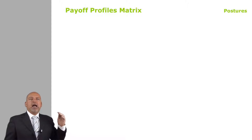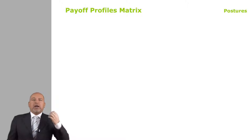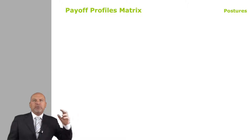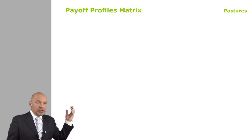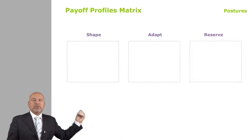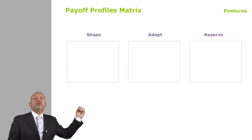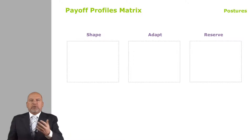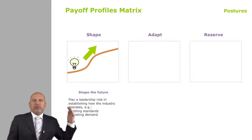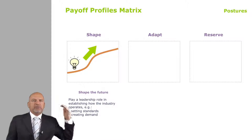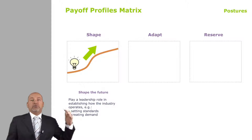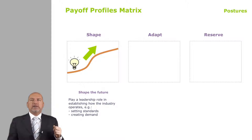The first step is the posture. At its most basic, a company can choose to deal with the future in three different ways: it can choose to shape the future, to adapt to the future, or to reserve the right to play. Typically, companies like Apple will always shape the future — whatever they do, they try to achieve leadership in the industry, setting standards, creating demand, etc.